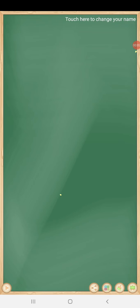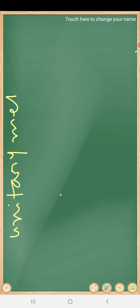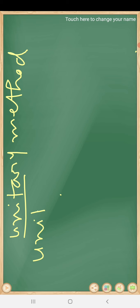Hello students, today we learn the unitary method. Unit means one. In the unitary method, first we divide, and after that we multiply.